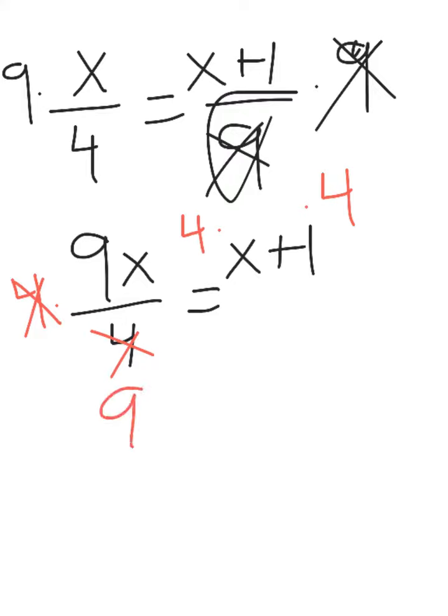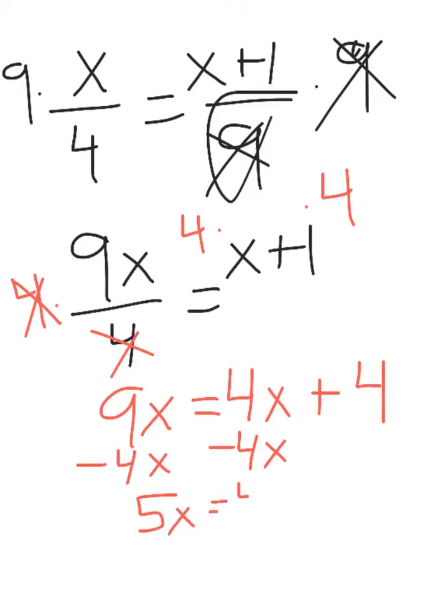So now I have 9x equals 4x, 4 times x, plus 1 times 4, which is 4. Now I'm going to subtract the 4x to each side, so I have 5x equals 4.